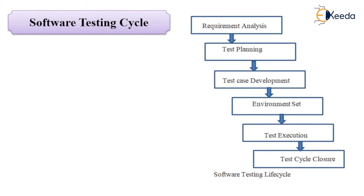The next step is test environment setup. It includes the setup and installation process of software and hardware required for your testing application. For example, if you want to use Windows 10 to test your application, you need to install Windows 10 and define hardware specifications like hard disk, RAM, and processor to avoid compatibility issues. After setting up the required software and hardware, the installation of the build is tested — that means the version or patch. You also need to check for test data and perform smoke testing.